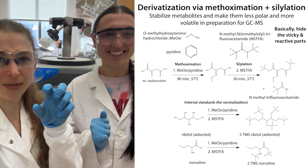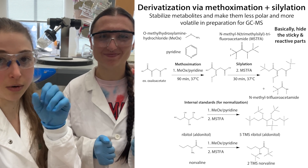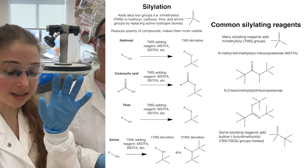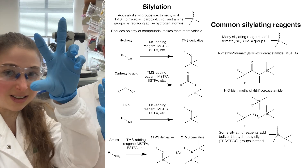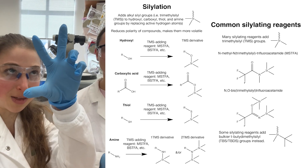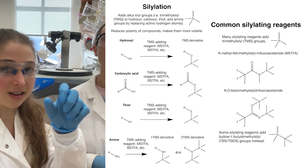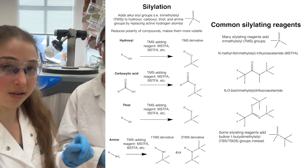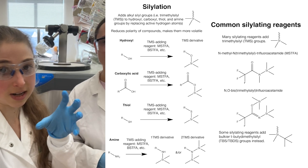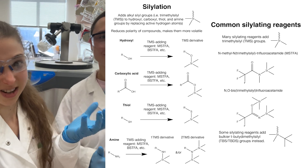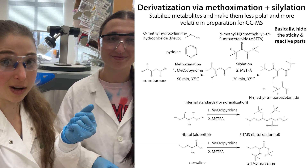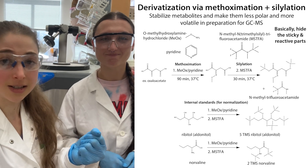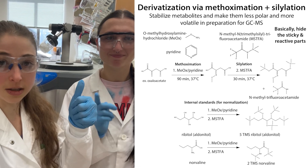The next step is TMS — trimethylsilane. We add trimethylsilane groups: silicon with three methyl groups on it. Methyl groups are non-polar, big and bulky, making it so the molecules don't want to hang out with one another. What happens then is, when you give them a little heat, they're going to vaporize and go through that column, and all is good.